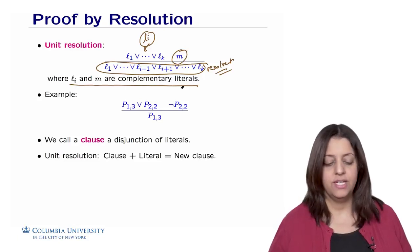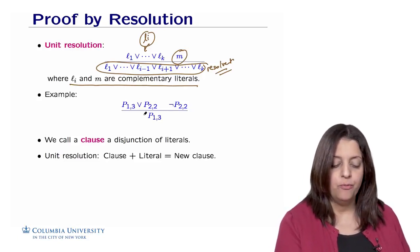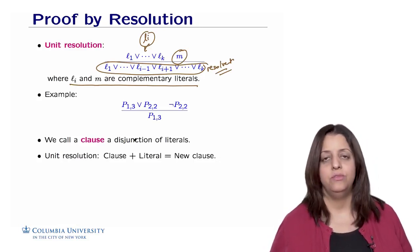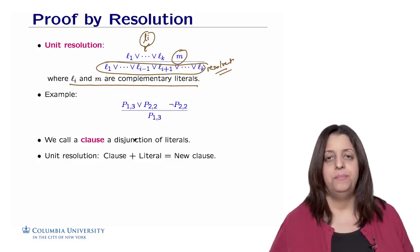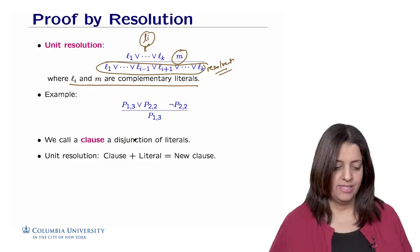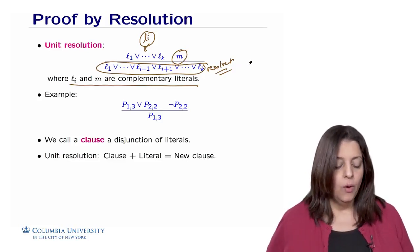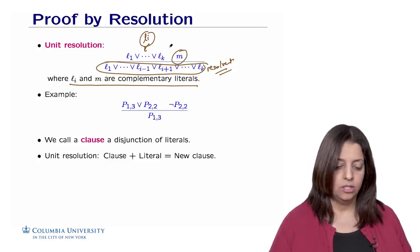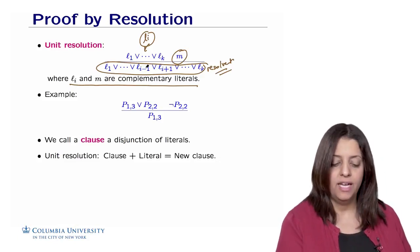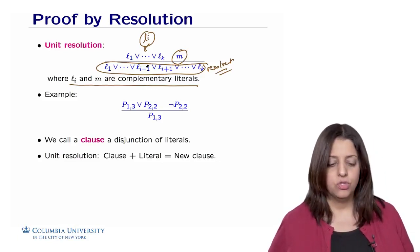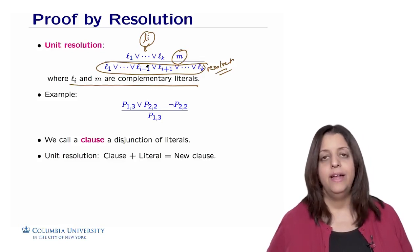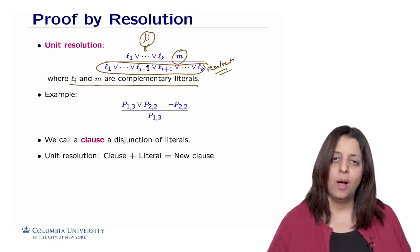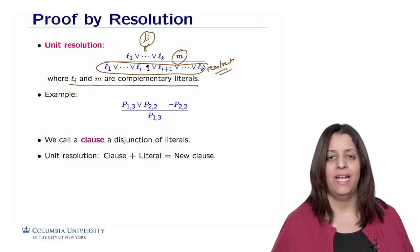For example, if we have not-P-2-2 and the clause P-1-3 or P-2-2 — meaning there is a pit in either 1-3 or 2-2 and no pit in 2-2 — then the only possibility is that the pit is in 1-3. A clause is defined as a disjunction of literals. Unit resolution applies a clause and a single literal to produce a new clause, by canceling the complementary literal pair.